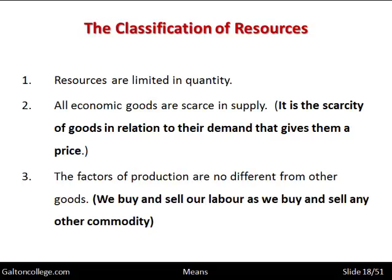The factors of production are no different from other goods — we buy and sell our labour as we buy and sell any other commodity. We think of ourselves as human beings with dignity and pride, and that is the way it should be, but we also sell ourselves on the market. We acquire qualifications and then offer ourselves to the highest bidder — and that's in a sense no different to buying items in a supermarket.